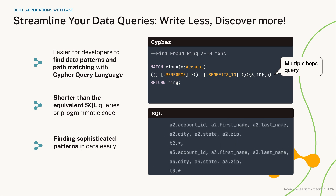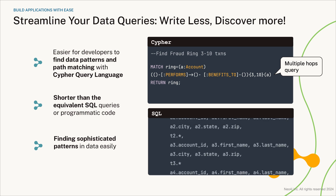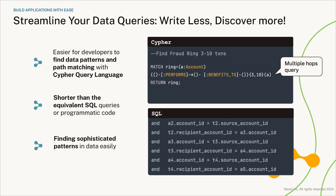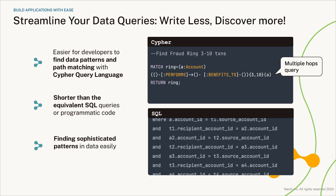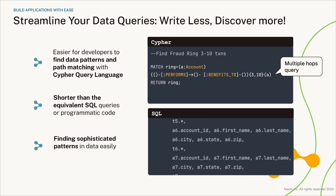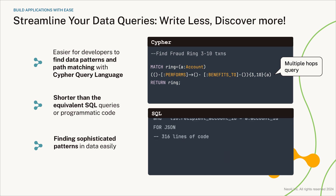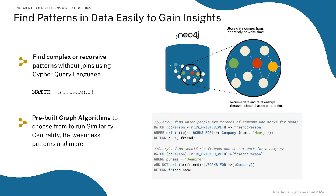Cypher is a query language for graph data. It's intuitive and expressive, making it easier for developers to find data patterns and do path matching. Cypher queries are usually shorter than equivalent SQL queries or programmatic code, and you can use them to match complex and recursive patterns in data.